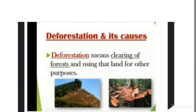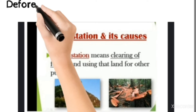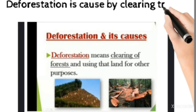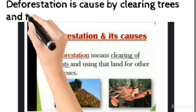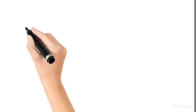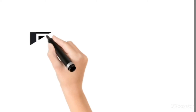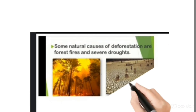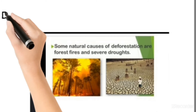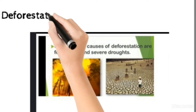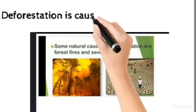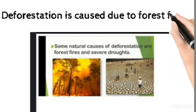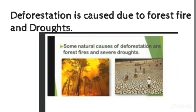Deforestation is caused by clearing trees and forest in a large area, and that land is used for other purposes. Let us discuss some natural causes of deforestation. Large area forest fires and droughts are some natural causes of deforestation.